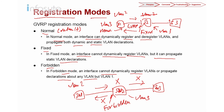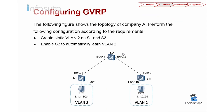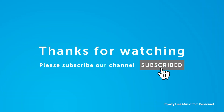Now we'll examine a lab on how to configure GVRP, which is quite straightforward. The topology shows Company A's network. We need to create a static VLAN 2 on Switch 1 and Switch 3, configure E001 and E002 ports as trunk, allow VLANs to pass through E002, and configure GVRP on Switch 2 to dynamically learn VLAN 2. Let's jump into the lab.